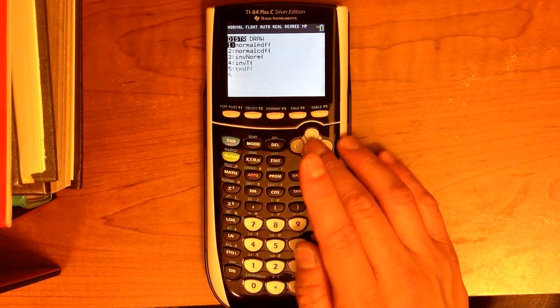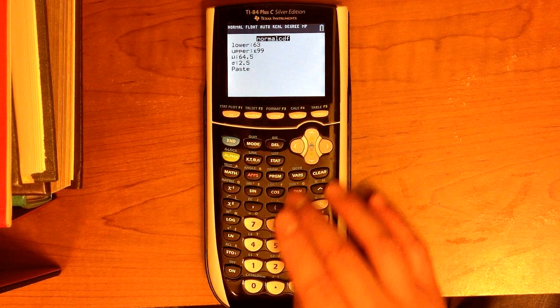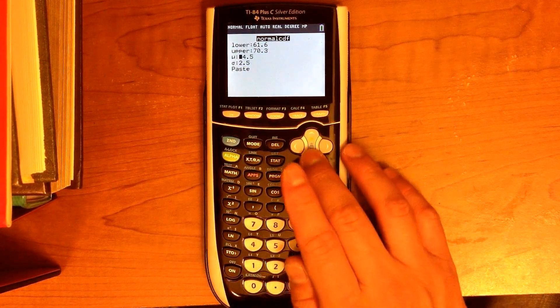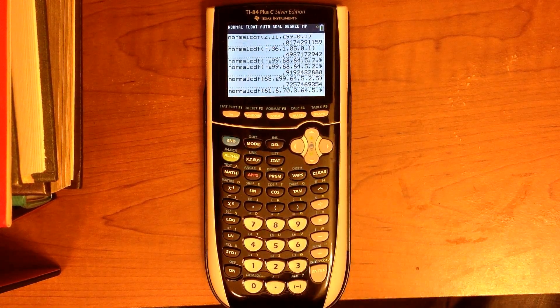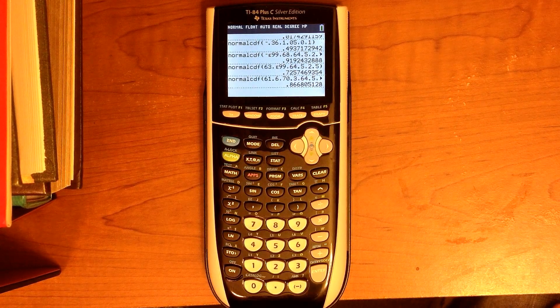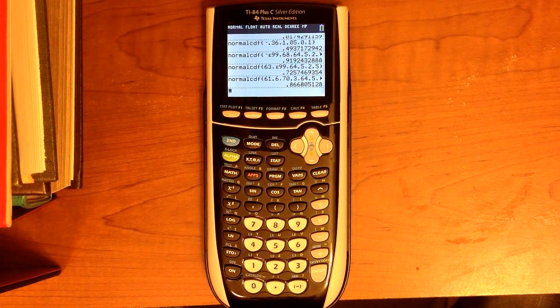And you can do the same thing with number 18. Between 61.6 and 70.3 inches tall. And you see these answers match what we get from the table. So that's how you do some normal calculations on the TI-83-84. Thank you for watching.